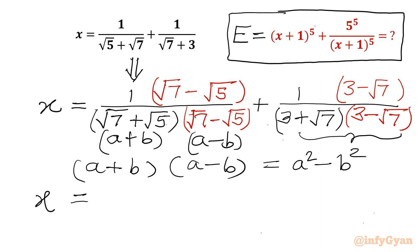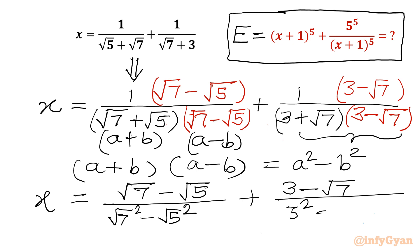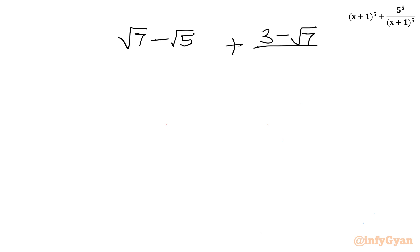So I will write x equal to (√7 − √5) divided by (√7² − √5²), plus (3 − √7) divided by (3² − √7²). Now √7² − √5² is 7 − 5 = 2, and 3² − √7² is 9 − 7 = 2. So both denominators are 2. I will write (√7 − √5 + 3 − √7) with common denominator 2.